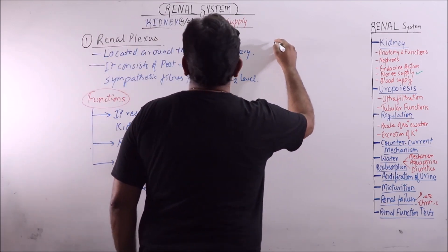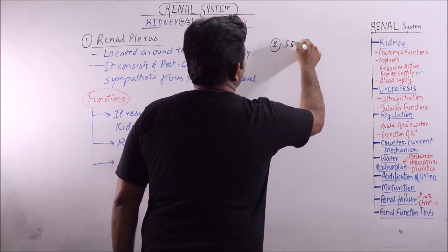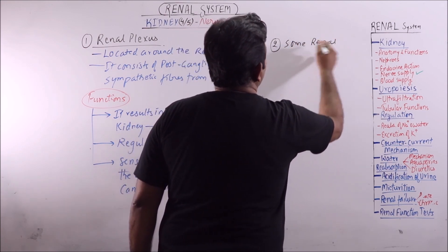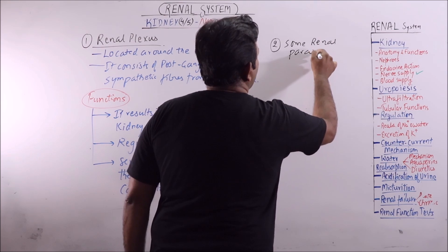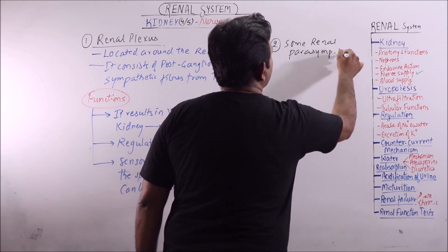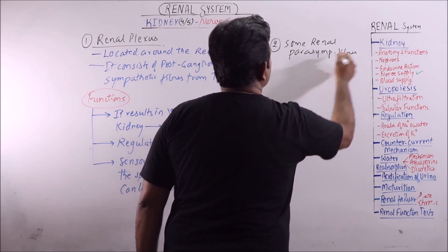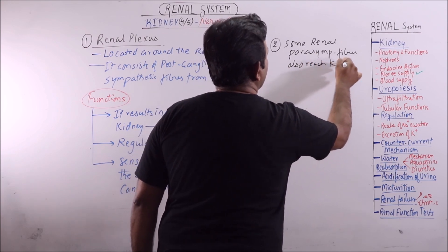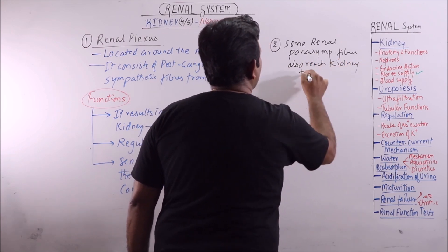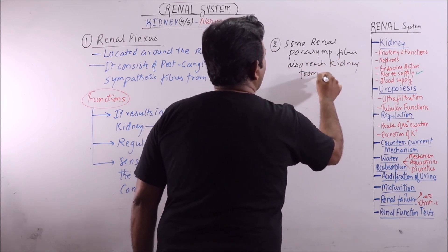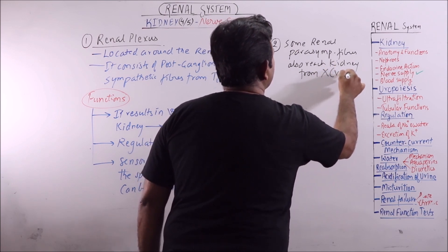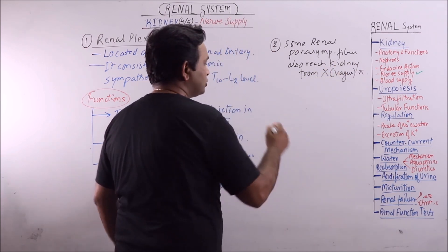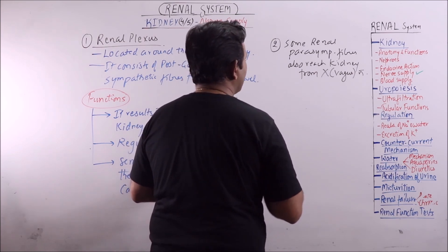Some renal parasympathetic fibers also reach the kidney from the vagus nerve, but their function is not clear.